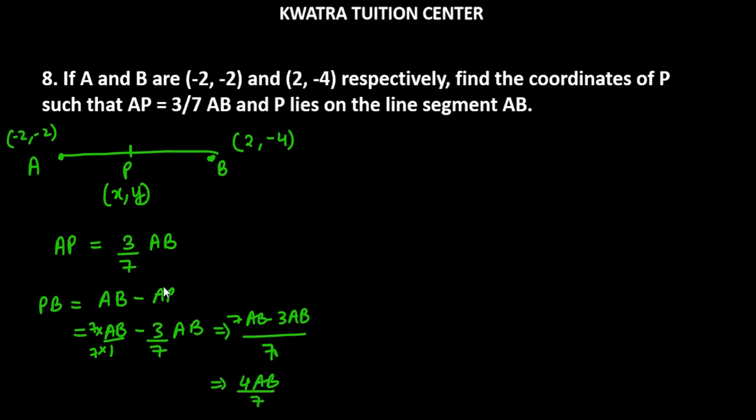So the total value is 7, and our line is divided into two parts. One ratio is 3, another is 4. PB's ratio is 4. So from this we know M1 and M2. Now we have M1, M2 values, X1, X2 values, and Y1, Y2 values.